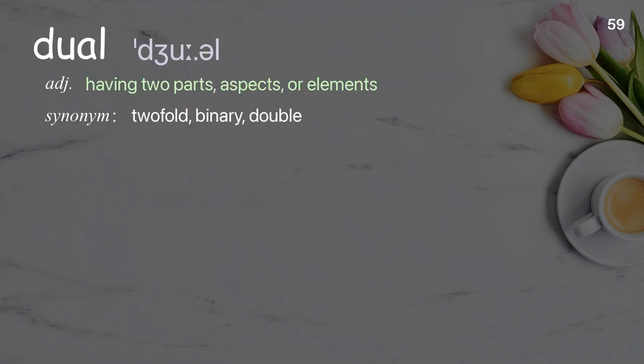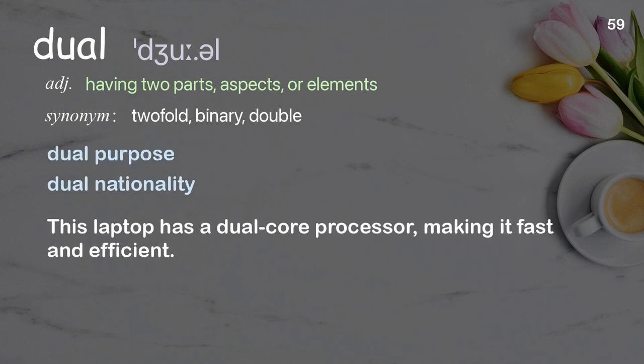Dual: having two parts, aspects, or elements. Examples: dual purpose, dual nationality. This laptop has a dual-core processor, making it fast and efficient.